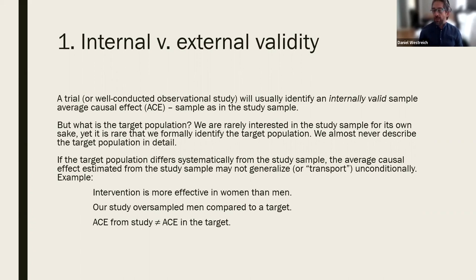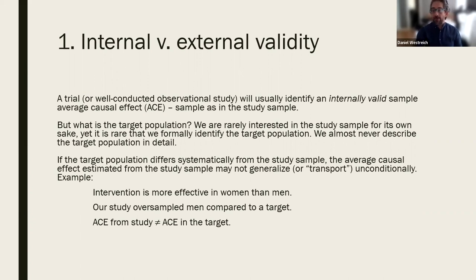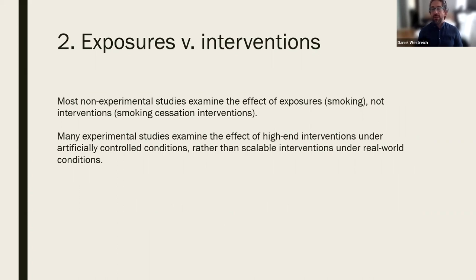Briefly: a trial or well-conducted observational study will usually identify an internally valid sample average causal effect — sample meaning the study sample. But we're rarely interested in the study sample for its own sake. It's very rare that we formally identify the target population, and yet if the target population differs systematically from the study sample, the average causal effect may not generalize unconditionally. If an intervention is more effective in women than men, and our study oversampled men — which is very common in randomized trials — the average causal effect in the study is not generally equal to that in the target.